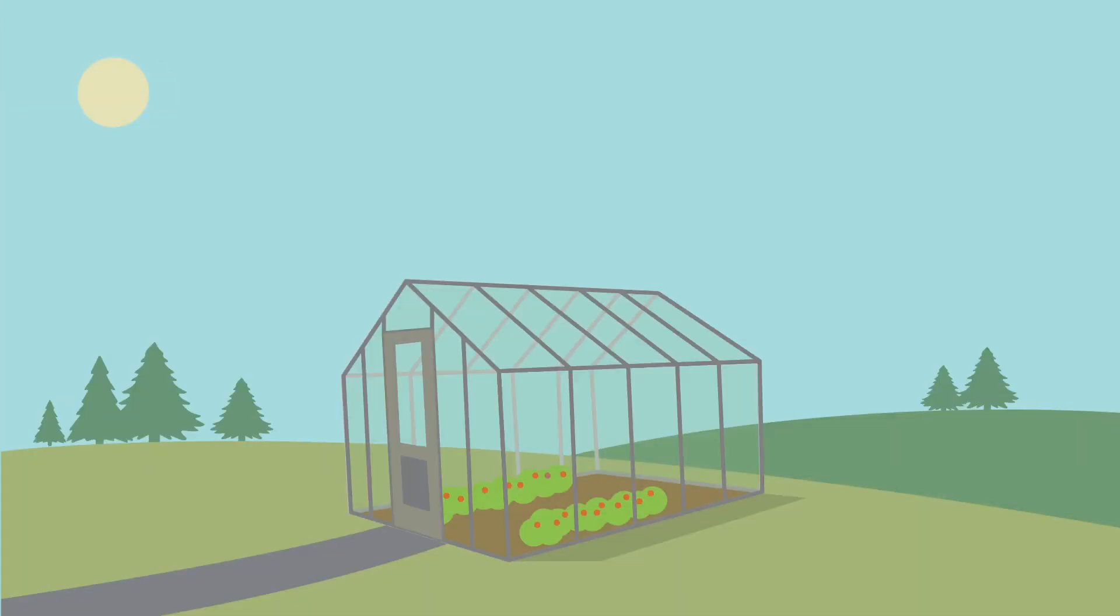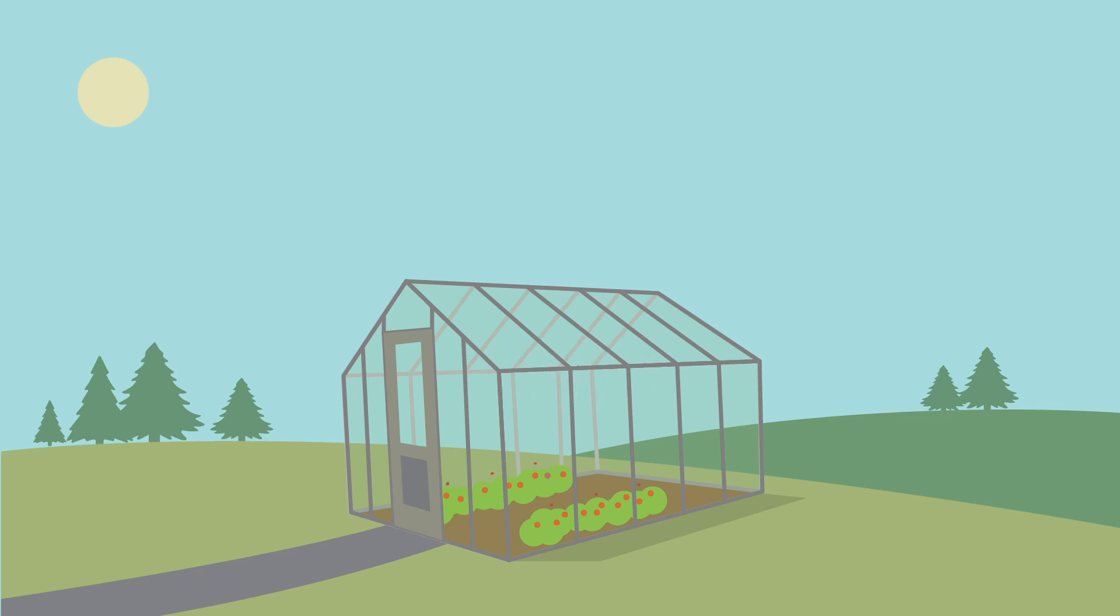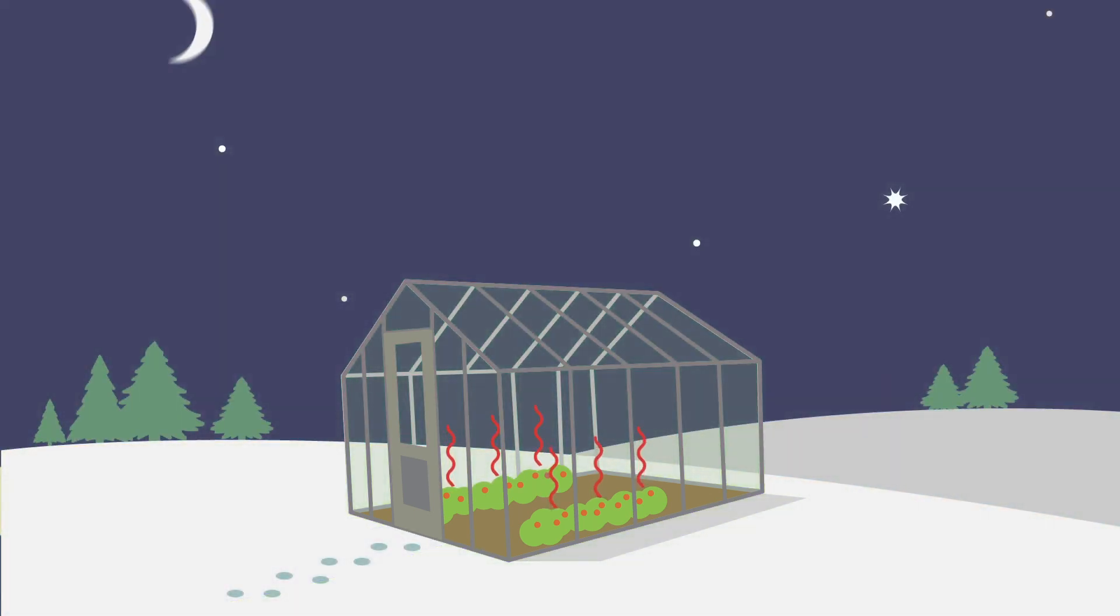A greenhouse is a building with glass walls and a glass roof. The clear glass allows sunlight to shine into the greenhouse while also trapping the sun's heat inside. This is how a greenhouse keeps plants warm even at night and in the winter.